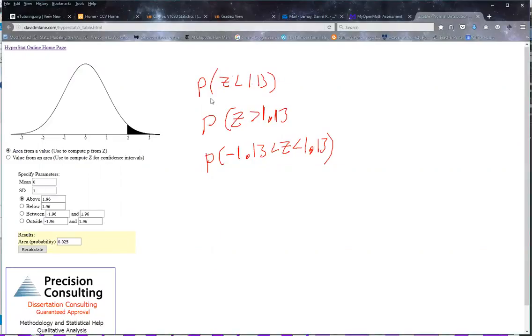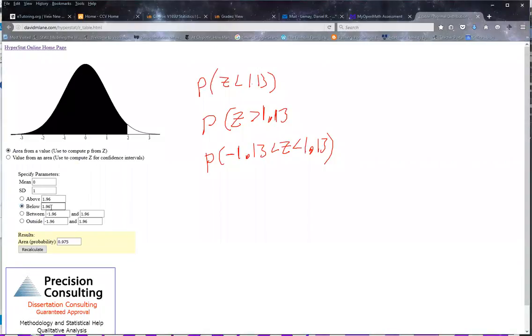For this first one, I'm going to have a mean of zero, z-score of less than 1.13. So I'm going to go below and I'm going to put in the 1.13 and calculate it. And notice that's that black area. And there's the probability.